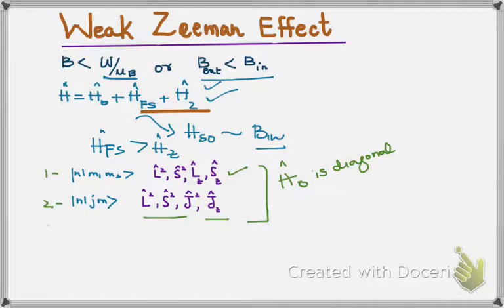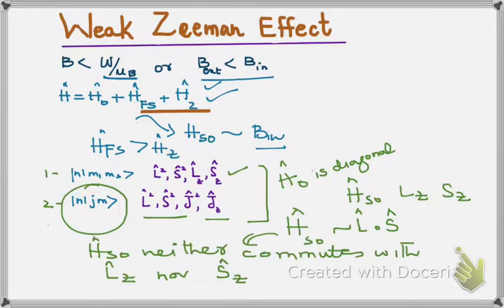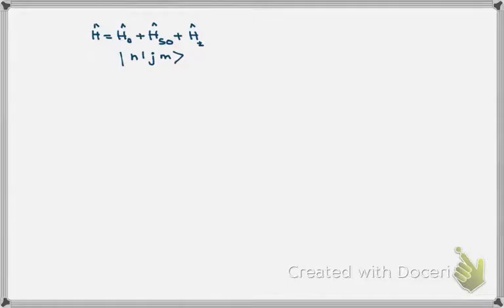But HS₀, the spin-orbit Hamiltonian, does not commute with Lz nor does it commute with Sz, as it includes the term L·S. So the good choice of joint eigenstate is |n,l,j,mj⟩. In the weak Zeeman effect, the best choice of eigenstate is |n,l,j,mj⟩.